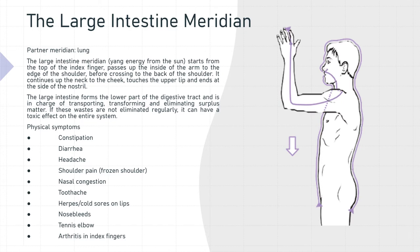The physical symptoms associated with large intestine meridian imbalance are constipation, diarrhea, headache, shoulder pain such as a frozen shoulder, nasal congestion, toothache, herpes and cold sores on the lips, nosebleeds, tennis elbow, and arthritis in the index fingers.